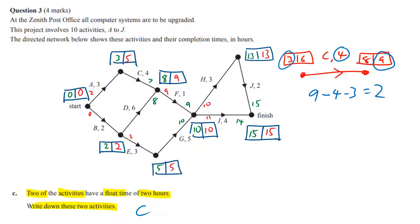The other one is actually A, because you can see they're on the same path so they've got to have the same float. There's no other paths involved here and we can see a little two here, but let's just take these numbers and see if that actually does prove we've got a float of two.